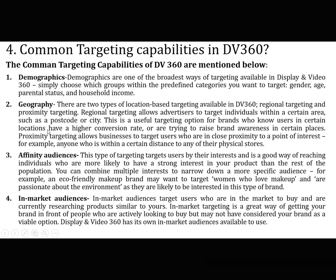Regional targeting is useful for brands who know users in certain locations have a higher conversion rate or are trying to raise brand awareness in specific places. Proximity targeting allows businesses to target users who are in close proximity to a point of interest — for example, anyone within a certain distance of one of their physical stores. The third targeting option is Affinity Audiences, which targets users by their interests, reaching individuals more likely to have a strong interest in your product. You can combine multiple interests to narrow down a more specific audience.